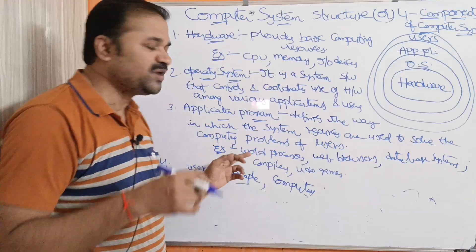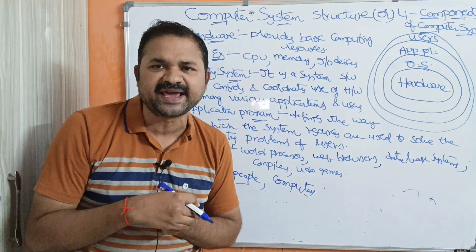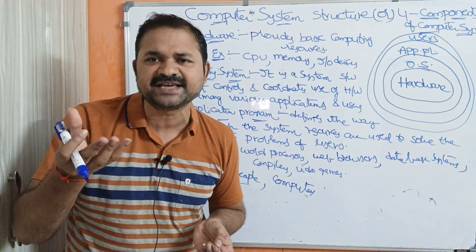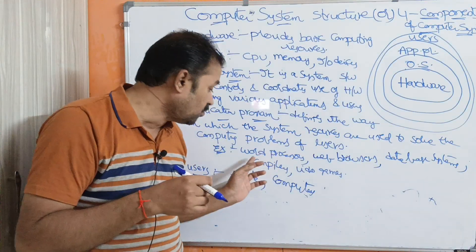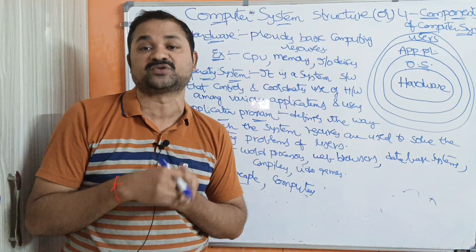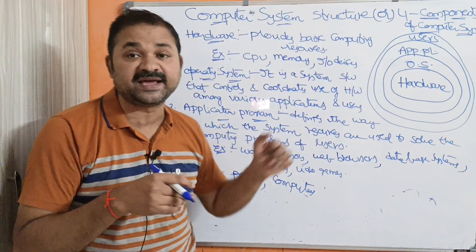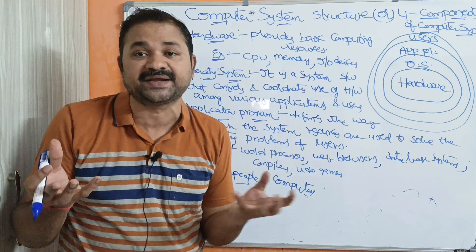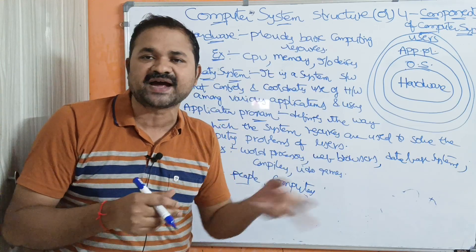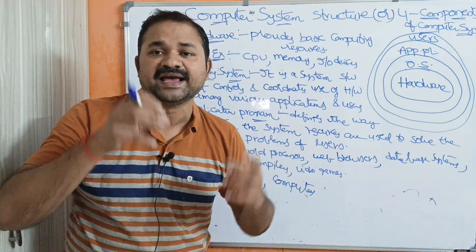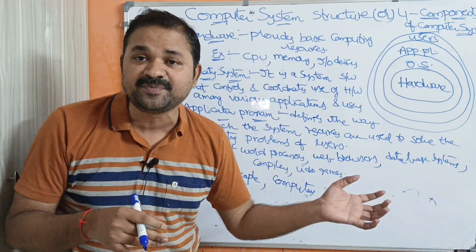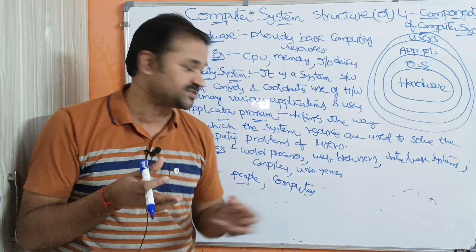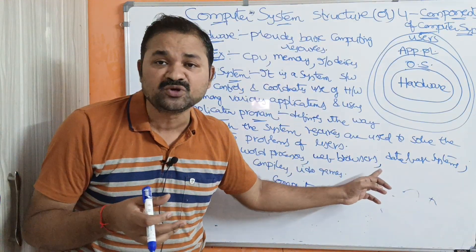Let us see some examples of application programs. First, word processor — take the example of a word document. A word document is a word processor, which is an application program, because it is a program developed by the user. Here we are developing and creating the word document.